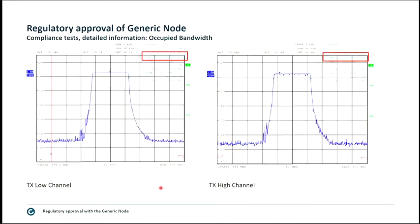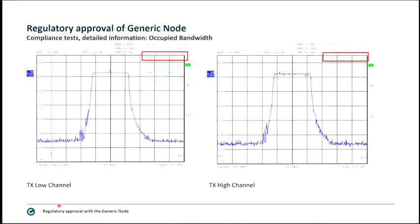Occupied bandwidth comes from the efficient spectrum use requirement. If you claim your occupied channel bandwidth is 125 kHz, you need to prove that you use 125 kHz and not 126 kHz or more. Markers T1 and T2 show directly the occupied bandwidth of 125 kHz — this is very well met for both the low and high channels. Cases where this was 125.8 kHz would not be compliant with efficient spectrum usage.